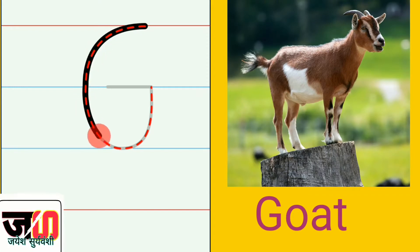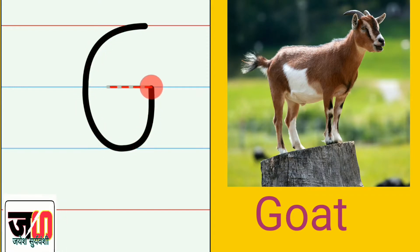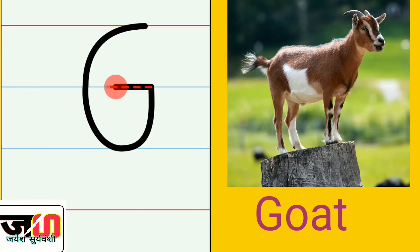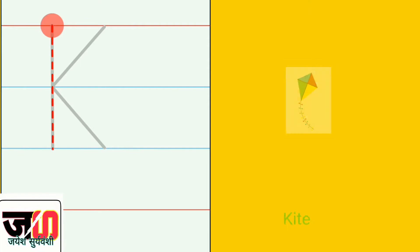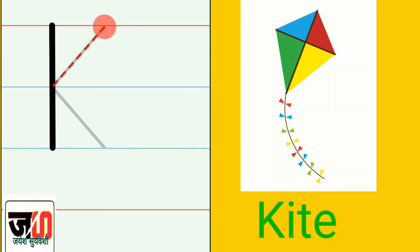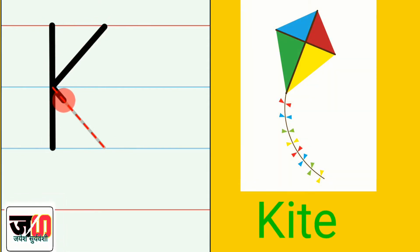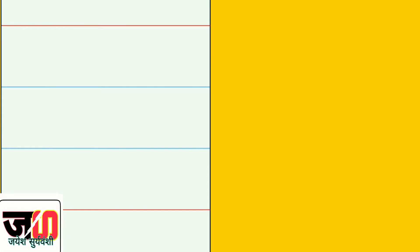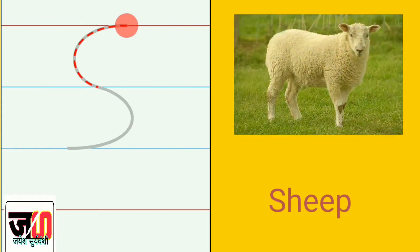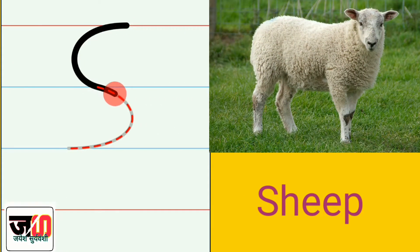G, G for goat. K, K for kite. S, S for sheep.